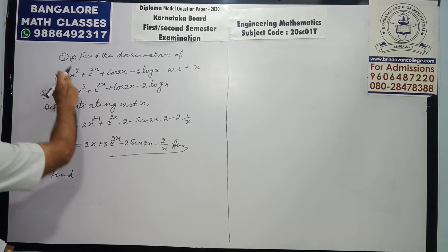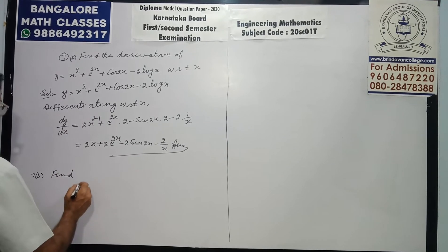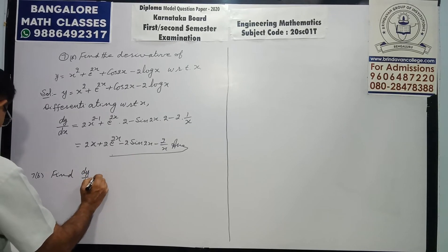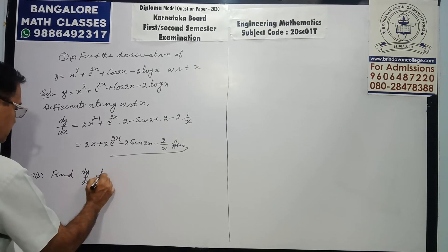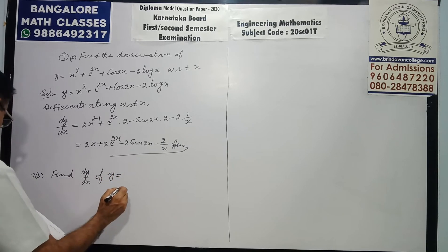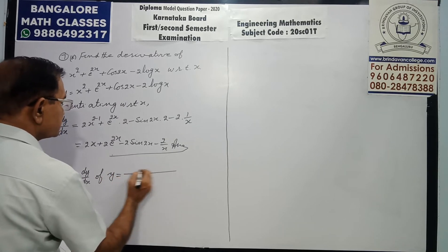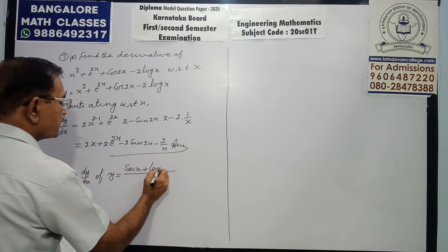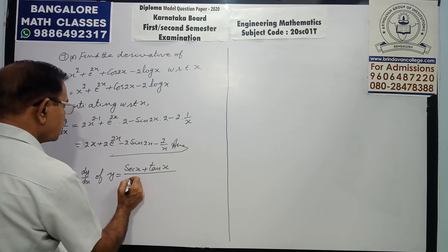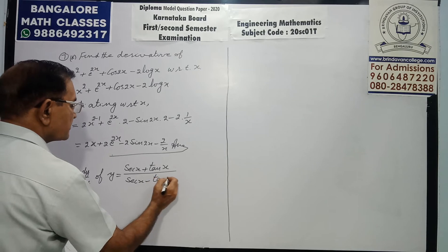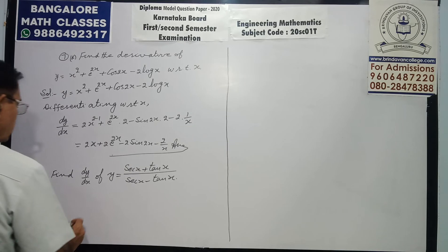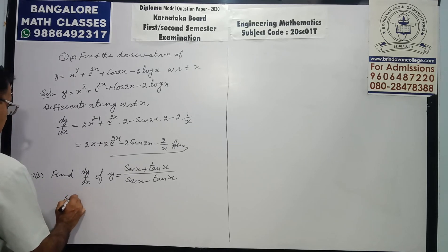There is 7th part b. Find dy/dx of y equals (secant x + tan x) over (secant x minus tan x). Solution: